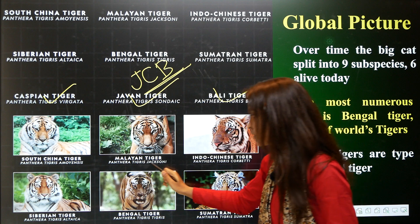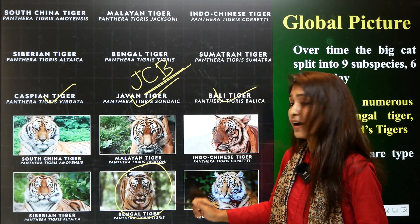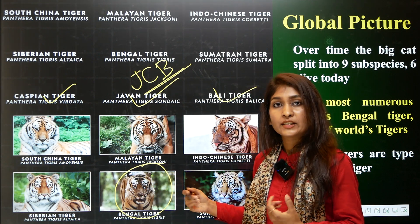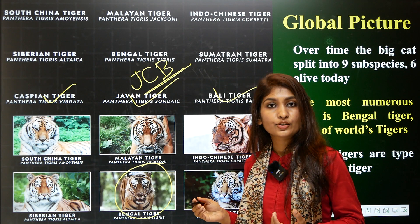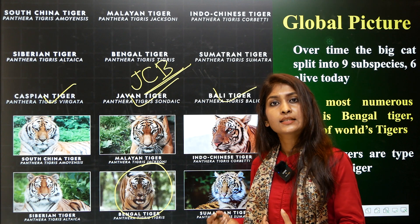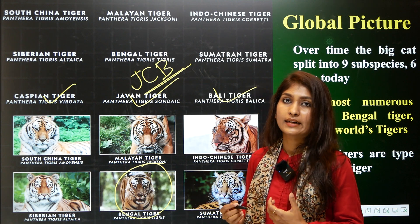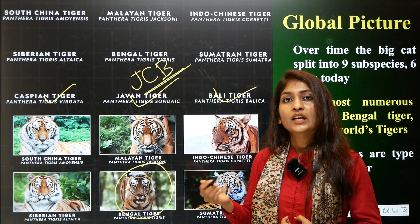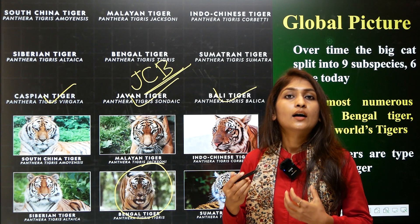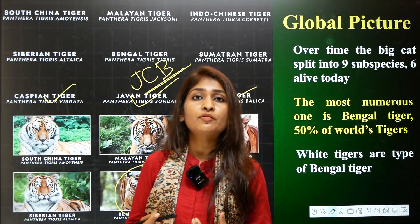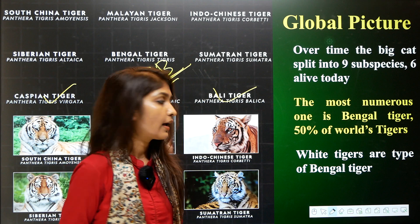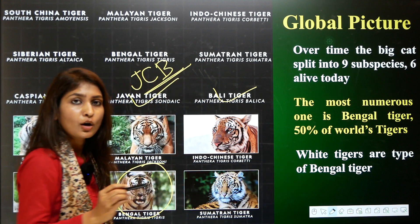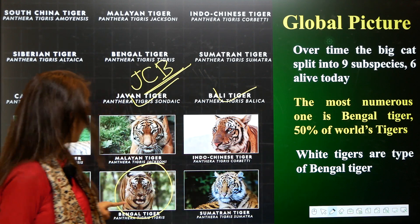Among the six existing subspecies, the Bengal tiger is important because it makes up almost 50% of the world's tigers, and India is its only natural home. This justifies the Royal Bengal Tiger being called the national animal. One more important fact: white tigers are a type of Bengal tiger.